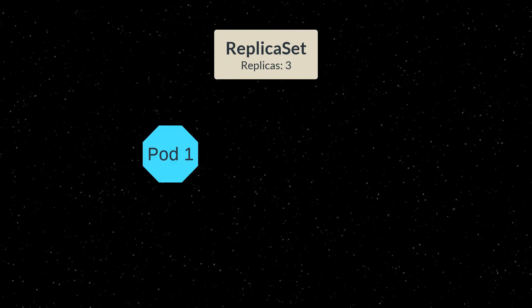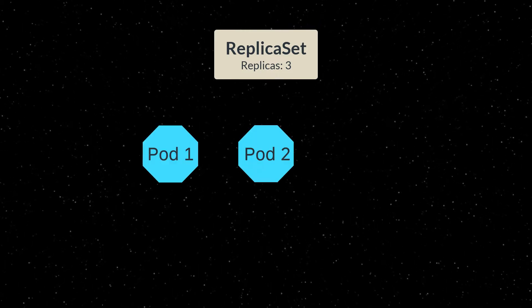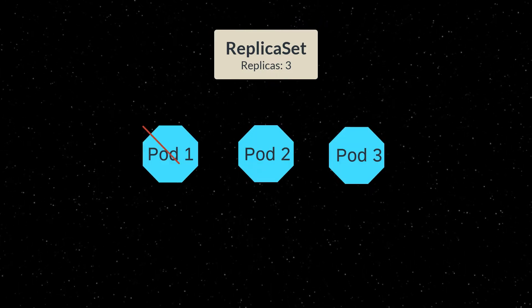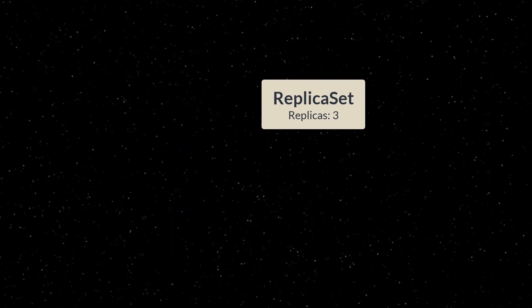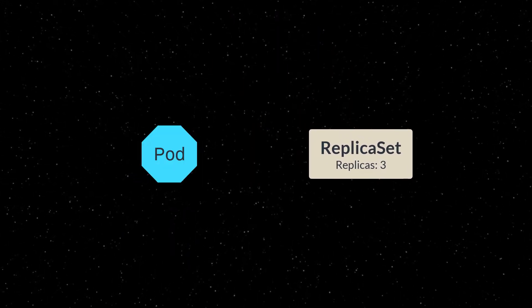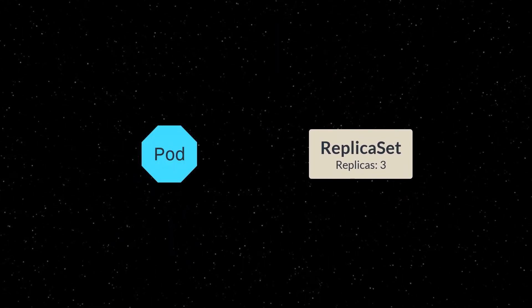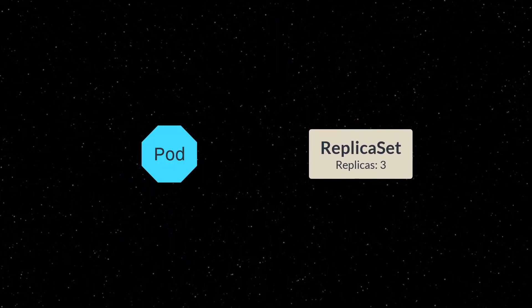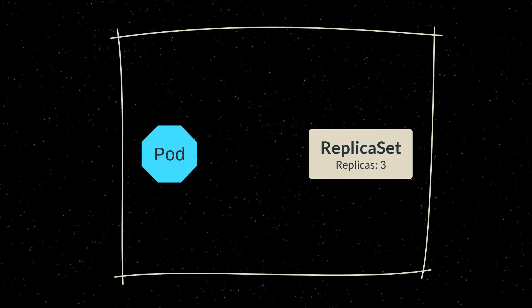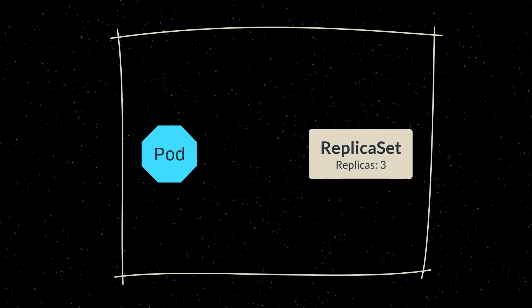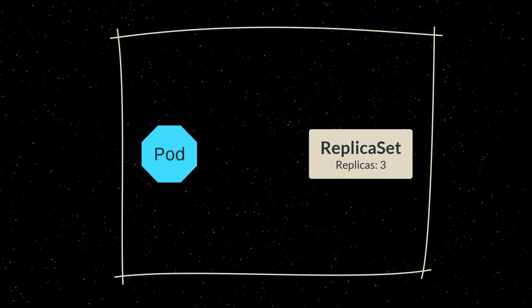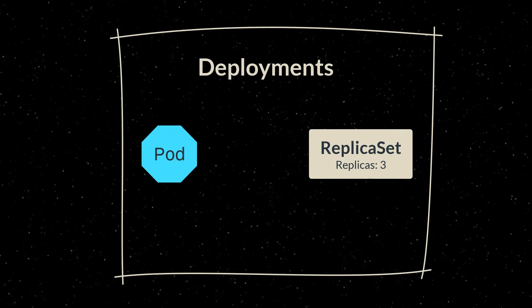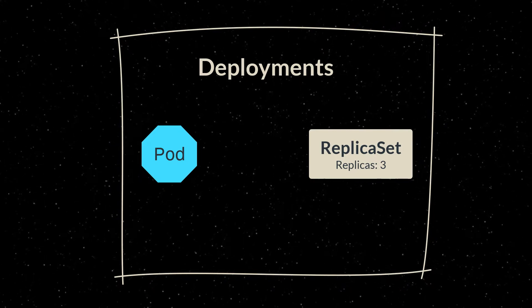Replica sets are great because they bring the aspects of replication but also self-healing together. So we have two important Kubernetes objects explained. But what if I want to have them managed by one single object to make my life easier? And that is where Kubernetes deployments come into play.